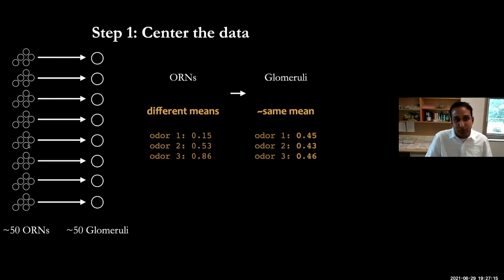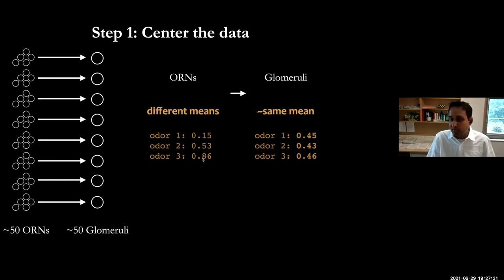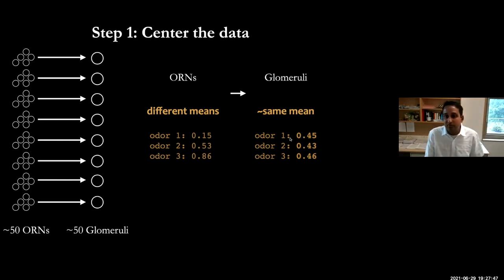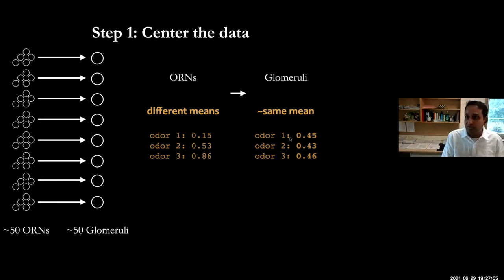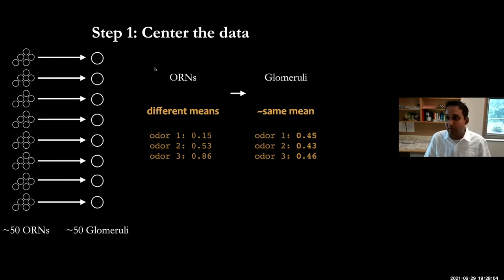If you look at any odor, the mean value over these 50 different values depends on the concentration — the higher the concentration, the higher the mean. But if you look at the distribution at this layer, that mean gets approximately equalized. This gives a more reliable way to distinguish between two different odors versus the same odor at two different concentrations. It's a mean-centering step, very common in data science, so you can compare things on an equal scale. Now I have a point in 50-dimensional space where all odors and concentrations have approximately the same mean.